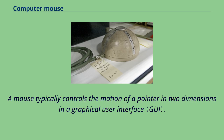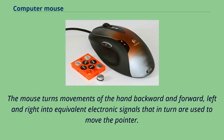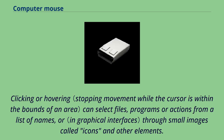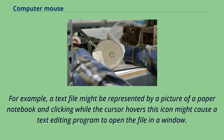A mouse typically controls the motion of a pointer in two dimensions in a graphical user interface, translating hand movements backward and forward, left and right into equivalent electronic signals. The relative movements of the mouse on the surface are applied to the position of the pointer on the screen, so hand movements are replicated by the pointer. Clicking or hovering can select files, programs, or actions through small images called icons — for example, a text file might be represented by a picture of a notebook, and clicking it might cause a text editor to open the file.